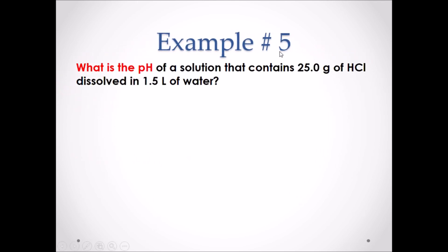Example number 5: what is the pH of a solution that contains 25.0 grams of HCl dissolved in 1.5 liters of water? Pause the video and attempt this example.